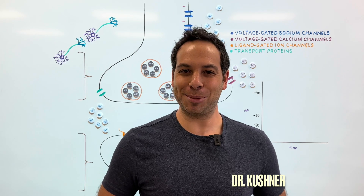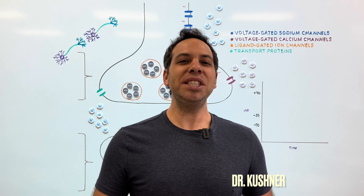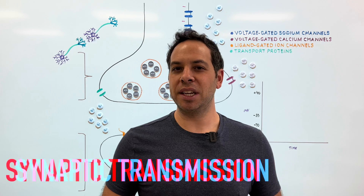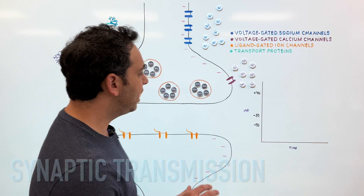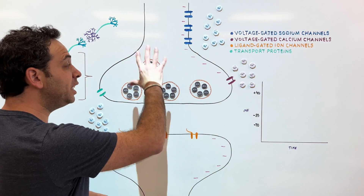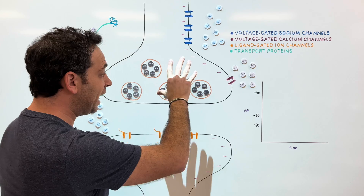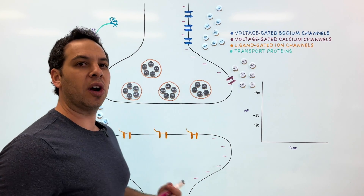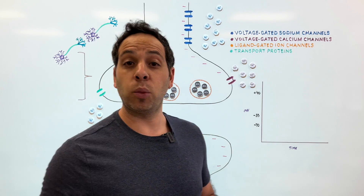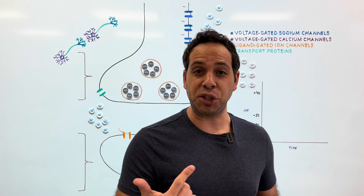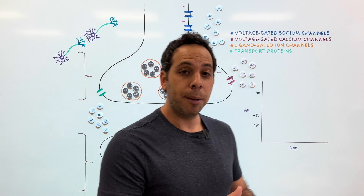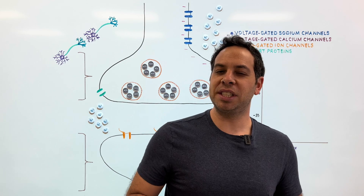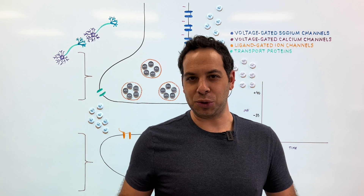Welcome to Psych Explained. In this video, we're going to take a deep dive into synaptic transmission — that is to say, how one individual cell or neuron communicates and passes its information to another cell or neuron. The way that you and I communicate is through spoken words, but the way cells communicate is through chemical messages and electrical signals.